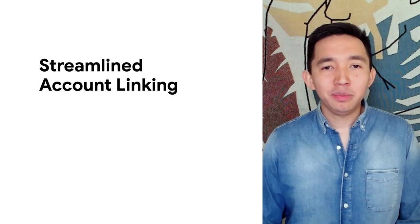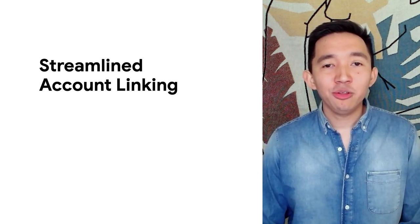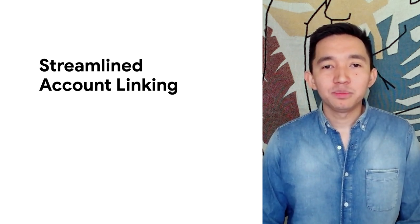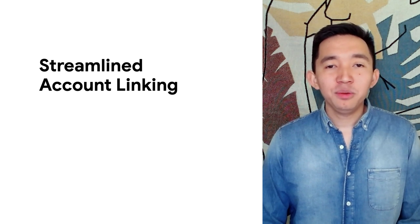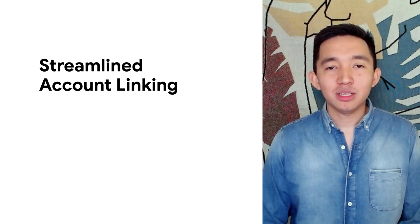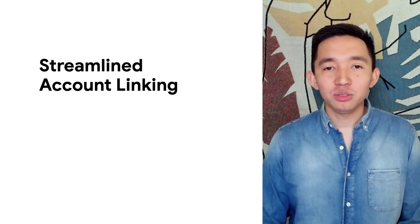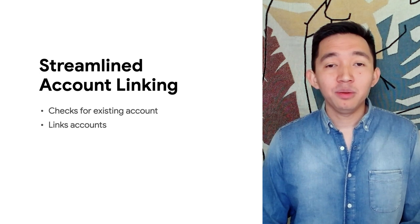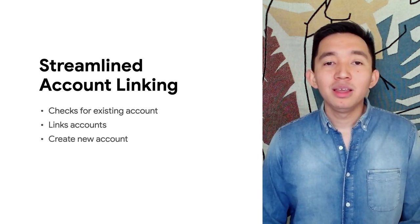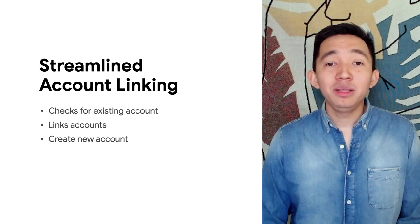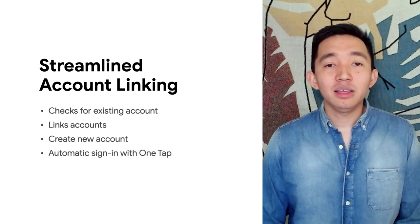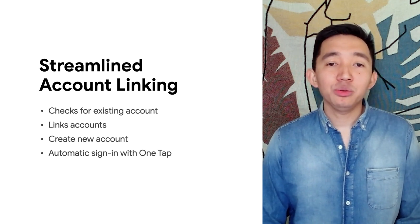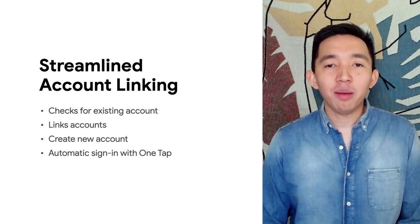Thanks Ade for the great explanation on OAuth. Now let's take a look at another type of account linking that builds on top of your OAuth integration: Streamline account linking. Streamline combines a few key pieces to make a really simple linking process without the user being redirected to your site and having to log in and remember their credentials on your service. It can check if there's an existing account with your Google account email, and if not, it can create a new account for you. The existing or new account will be linked to your Google account.